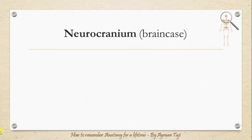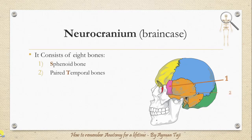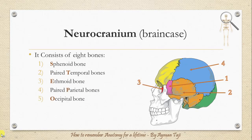The neurocranium consists of flat bones of the skull and the base of the skull, which include the following eight bones: the sphenoid bone, paired temporal bones, ethmoid bone, paired parietal bones, the occipital bone, and the frontal bone.